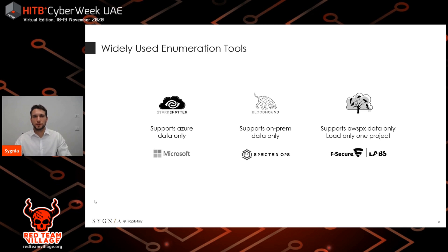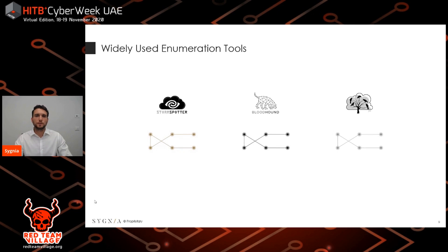On the left we have StormSpotter, developed by Microsoft and used to enumerate and identify gaps in Azure environments. On the right we have AWS PX, developed by F-Secure Labs and widely used for AWS environments. And of course we have Bloodhound, developed by SpecterOps — which I'm sure you're all familiar with — and primarily used for enumerating on-premises environments.